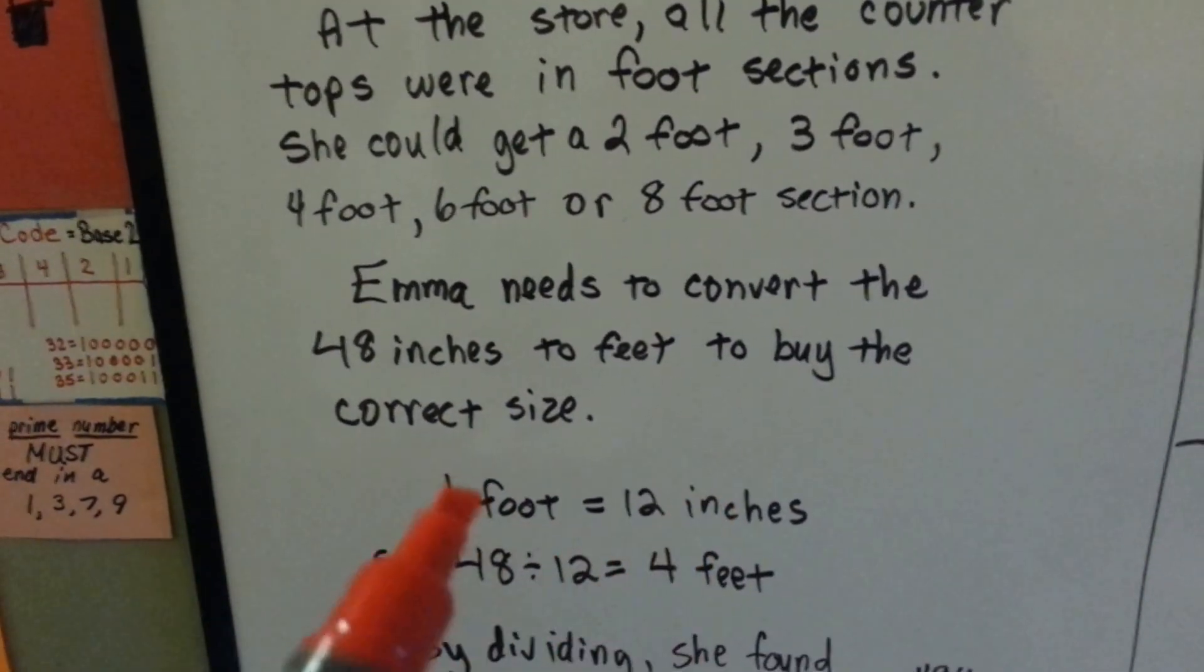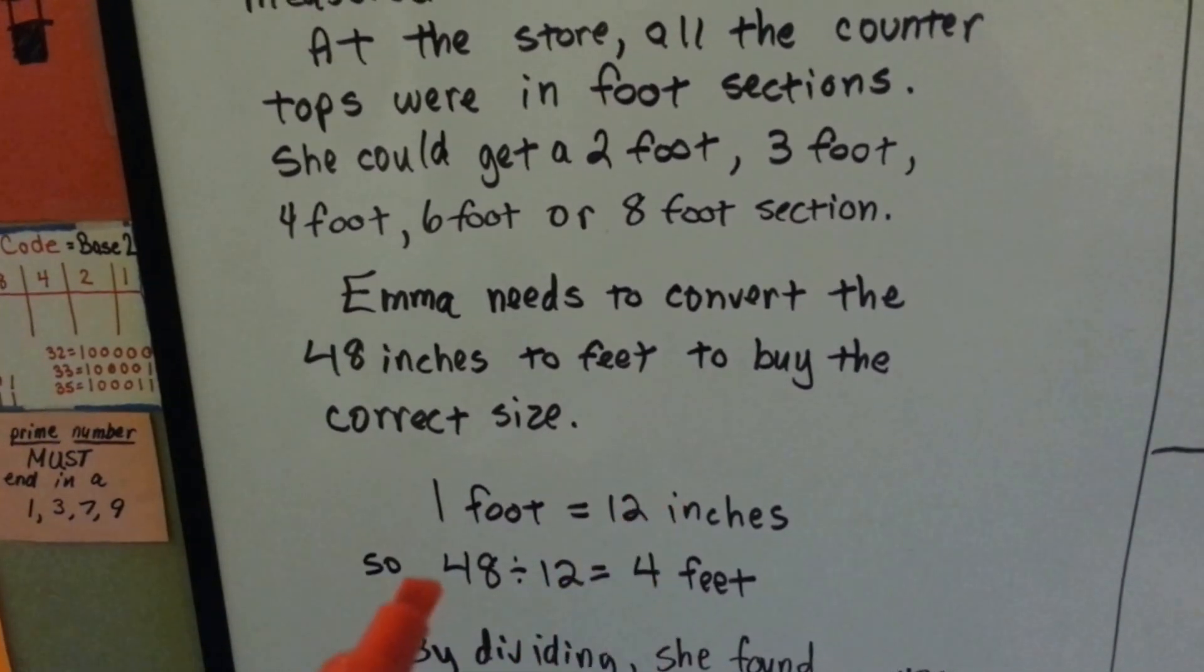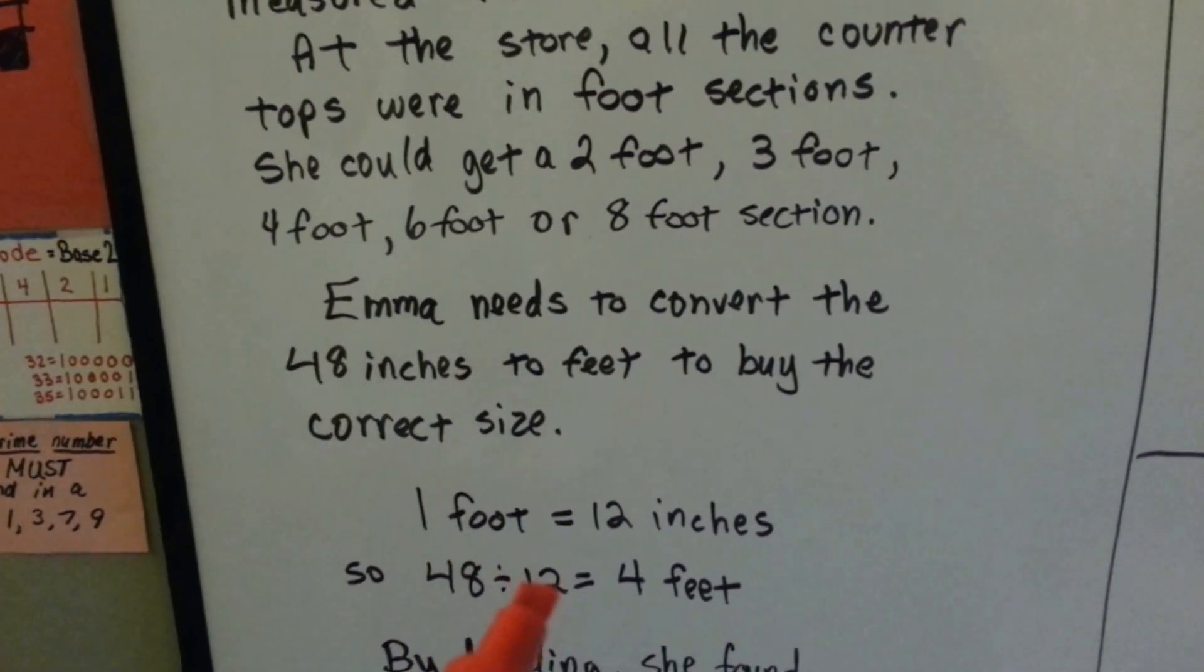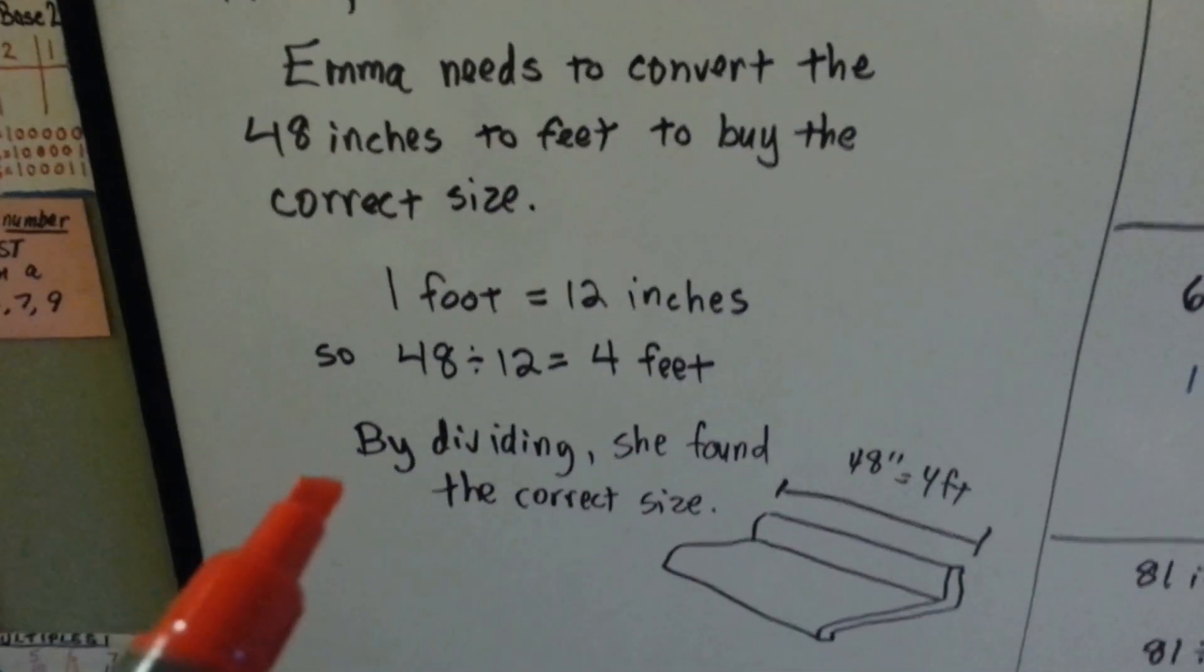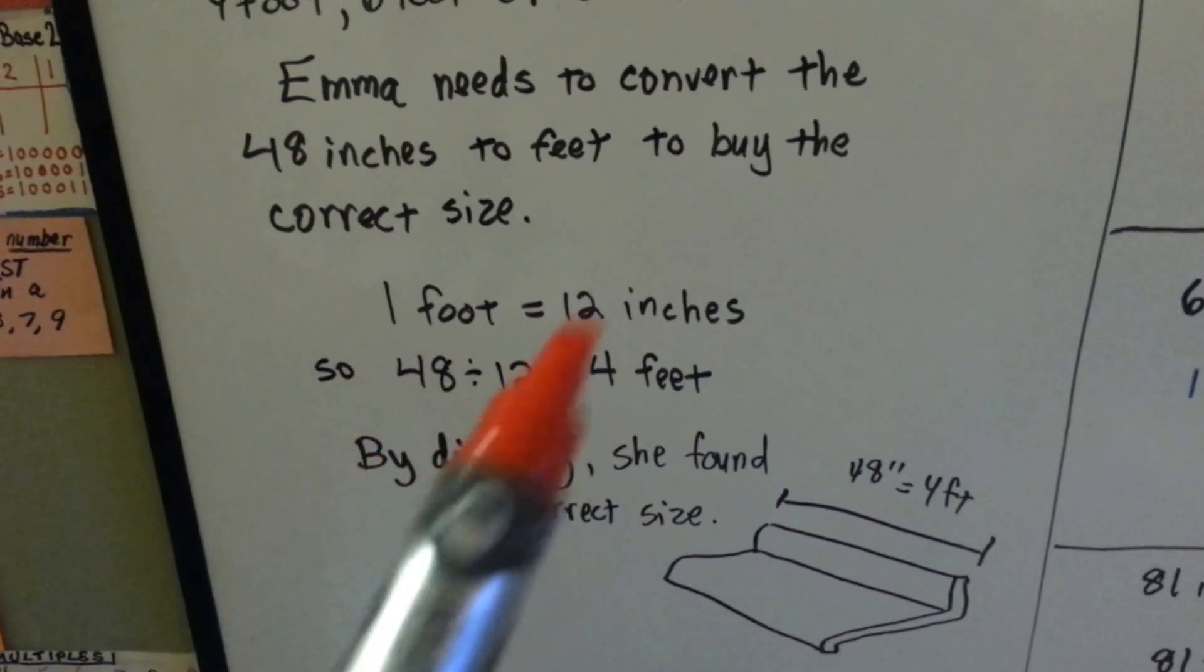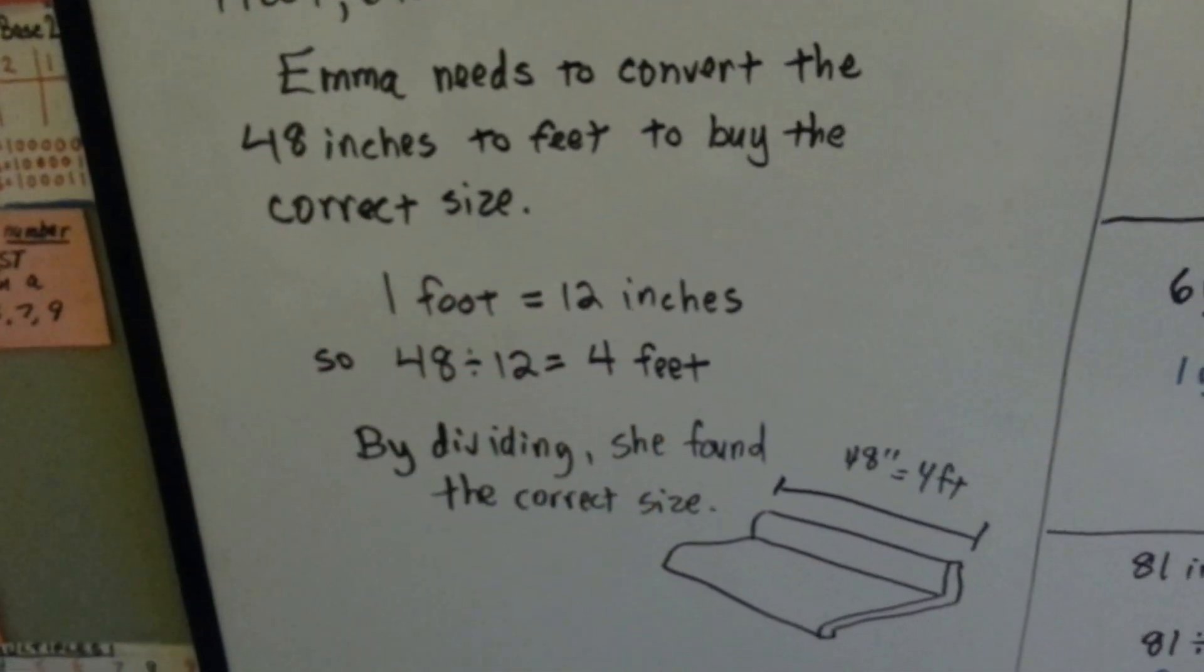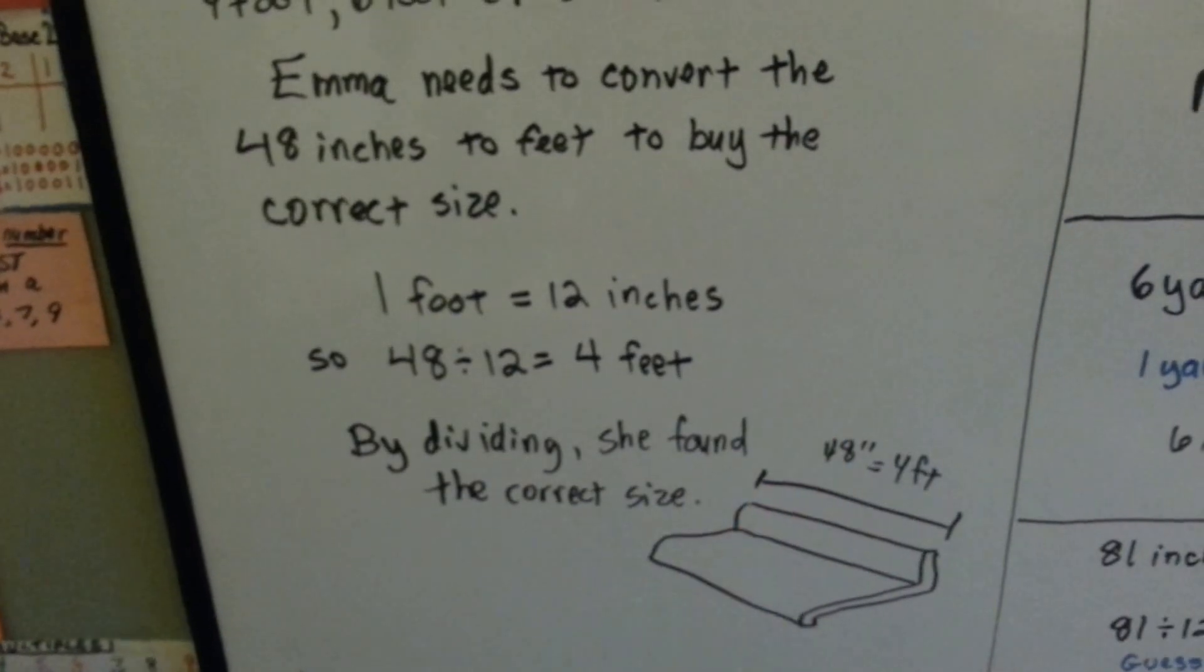She knows that 12 inches is 1 foot, so she took the 48 inch measurement she had and divided it by the 12 inches in each foot and came up with 4 feet. By dividing, she found the correct size. You can divide the units to convert them. So she bought a 4 foot section, which is 48 inches.